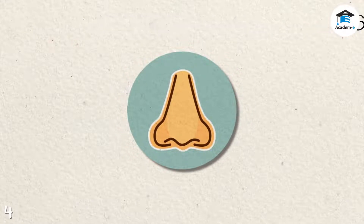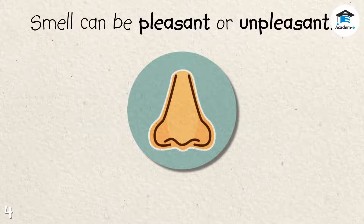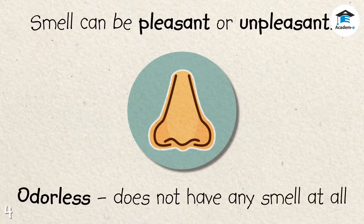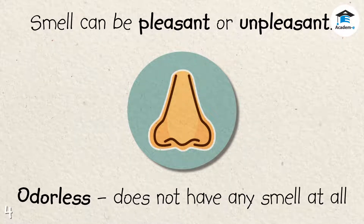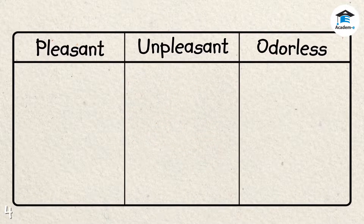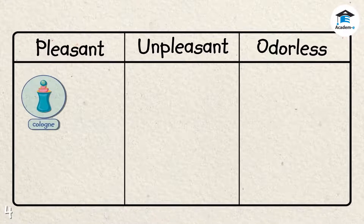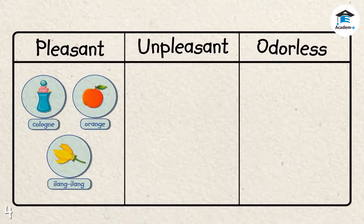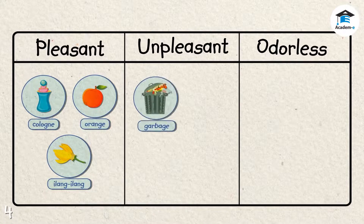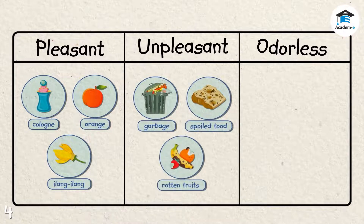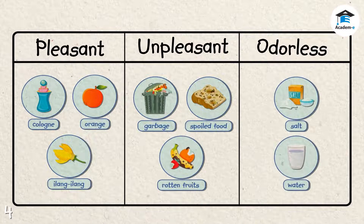The nose is the sense organ that enables us to smell things. It helps us tell whether an object has a pleasant or unpleasant smell. Odor is another word for smell. Not all things have odor — some things are odorless, or do not have any smell at all. Examples of things with pleasant smell are cologne, orange, and healing flower. Garbage, spoiled food, and rotten fruits have an unpleasant smell. Salt and water are examples of odorless things.